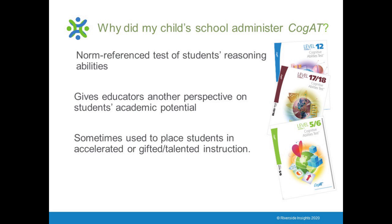Ability tests are different from achievement tests. Where achievement tests measure how well a student learns the curriculum for their grade level, ability tests are a little more abstract and measure students' ability to find patterns and relationships in the world. This is closely related to their capacity for learning. Therefore, some schools give COGAT in order to compare students' performance to their achievement scores and see if students may have more potential than their achievement scores indicate.